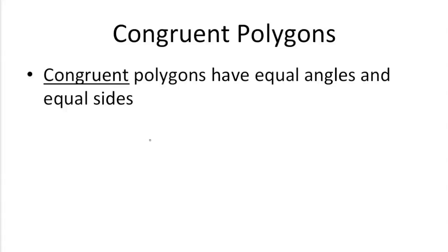Congruent polygons have equal angles and equal sides, so it pretty much means that they're just equal polygons.